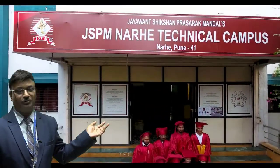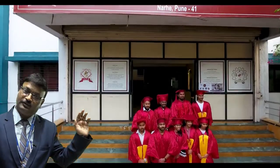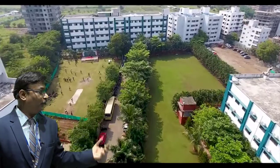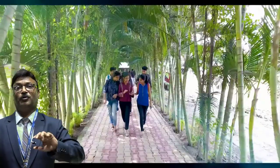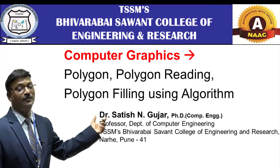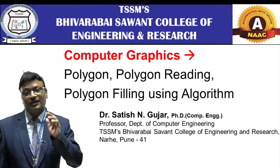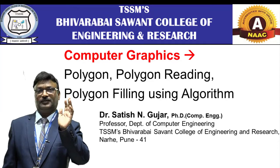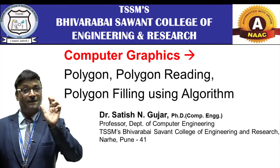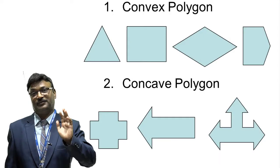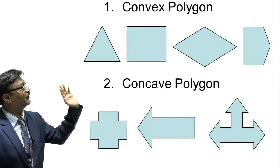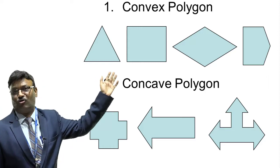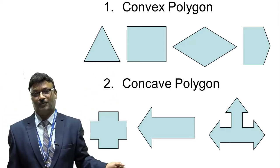Today I am going to show you how in computer graphics the polygon works — what polygon means, polygon reading, how you can read all the coordinates of the polygon, and polygon filling by using different methods. Any closed figure can be considered as a polygon, but the minimum number of vertices required is 3. The two types of polygon are concave and convex.